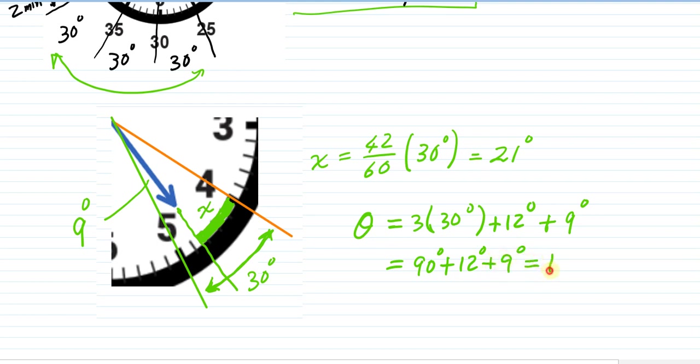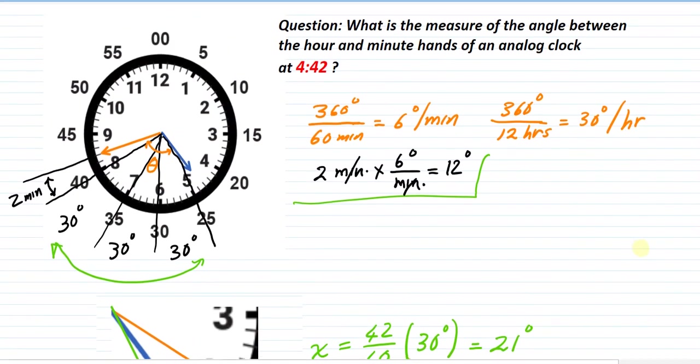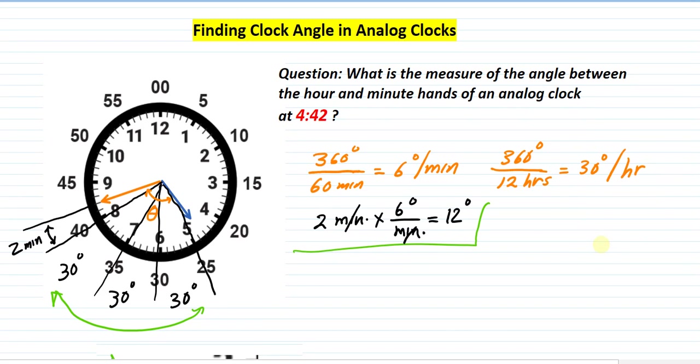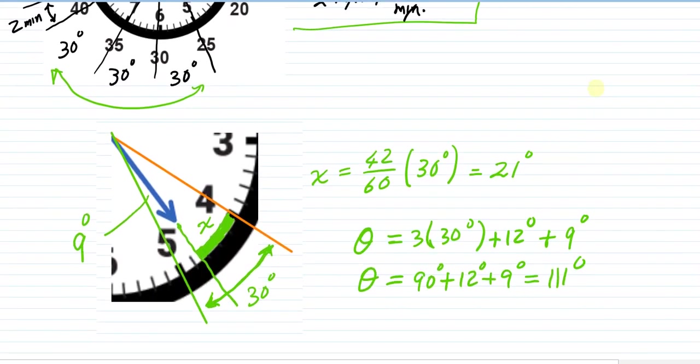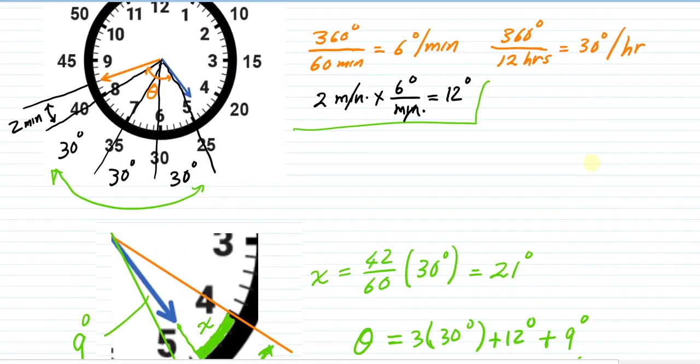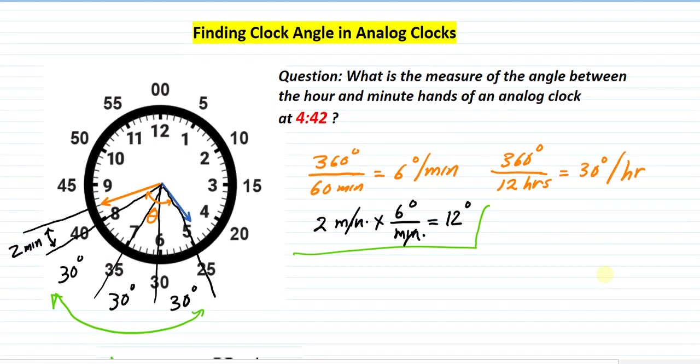So that's how you find the measure of the angle between the minute and hour hand in an analog clock. I hope this example—this brief video on how to do this—is helpful. In another video, I'm going to derive the general formula where you can input the hours and minutes in reference to 12 o'clock and find the measure of the angle very quickly for any time on the clock. I hope you find this video useful, and good luck to you.